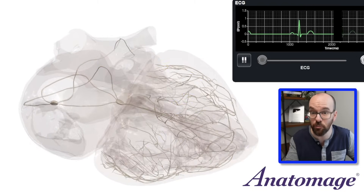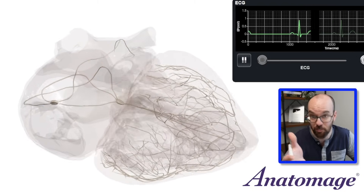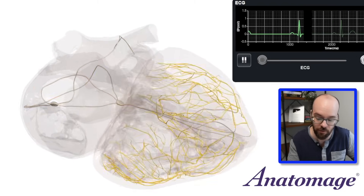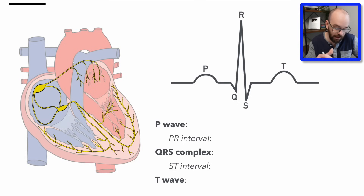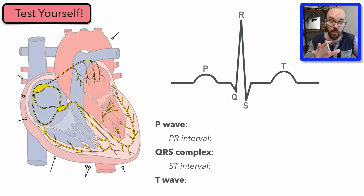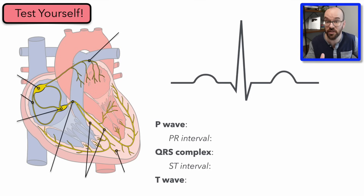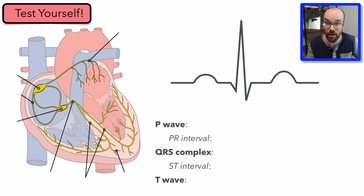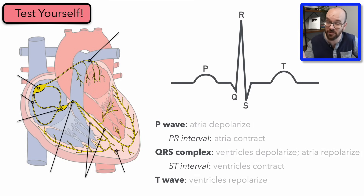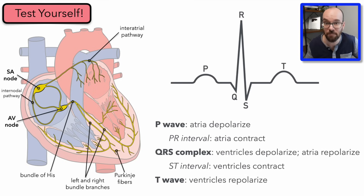The best way to learn this is to practice. Here's a blank diagram — pause the video, test yourself, and see if you can label all the parts of the cardiac conduction system and explain what's happening through each part of the electrocardiogram. Here's all that information back so you can check how you did.